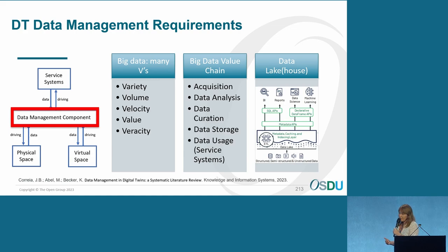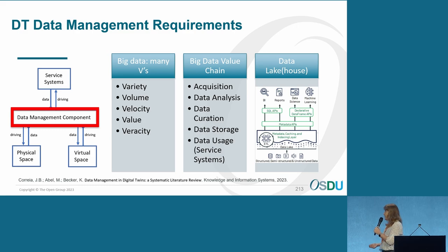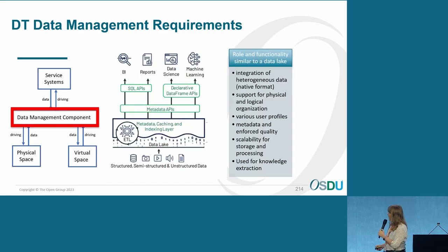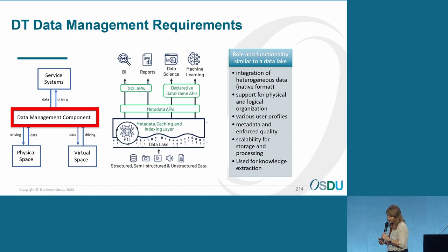When we see this in the big data value chain, there are activities for acquiring data, preparing data for analysis, curating data, storing and querying data, and using the data — which in the digital twin is the role of the service system. We are focusing on the four key activities. When we consider that, we see the role and functionality is more like a data lake or data lakehouse, a more modern concept. A data lake is a scalable storage and analysis system for data of any type, retaining native format and used mainly for knowledge extraction.